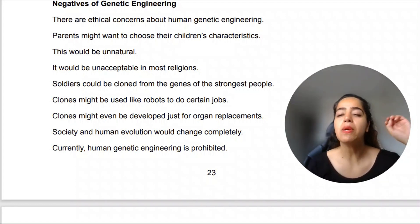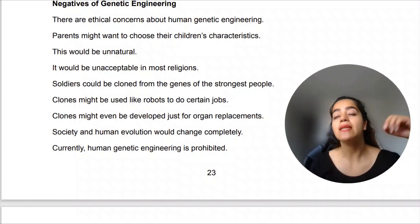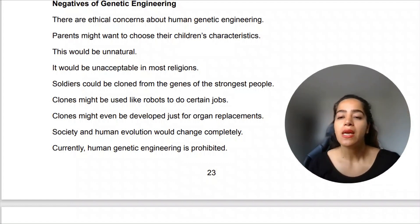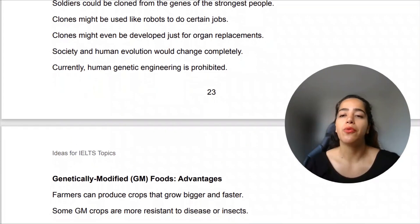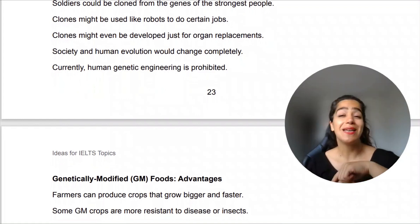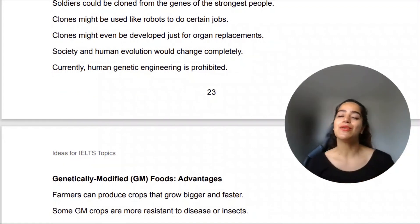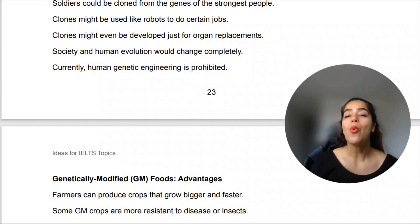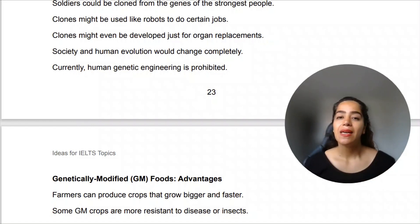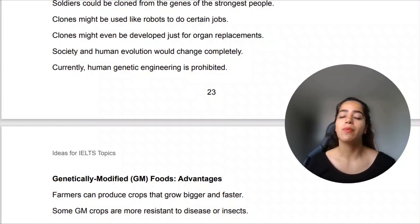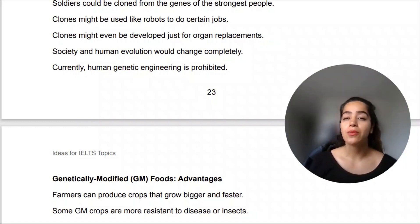Soldiers could be cloned from the genes of the strongest people, so instead of weak soldiers you can clone the strongest ones. Clones might be used like robots to do certain jobs, given different tasks and responsibilities to make human lives more convenient. Clones might even be developed just for organ replacements.